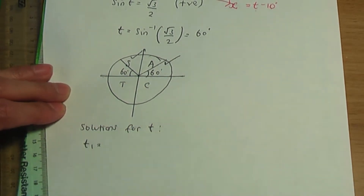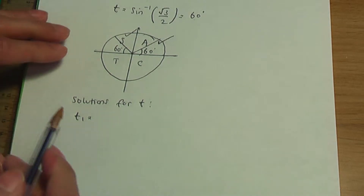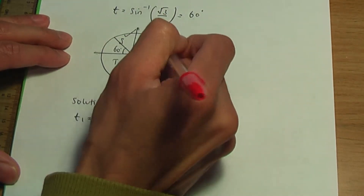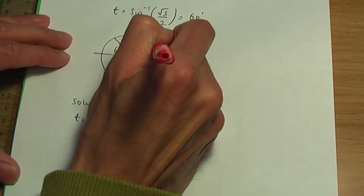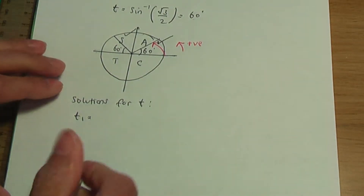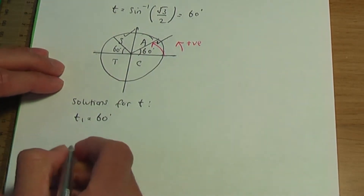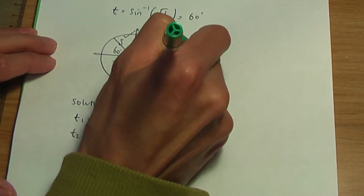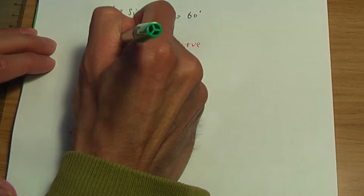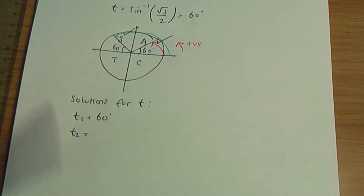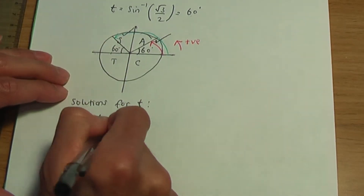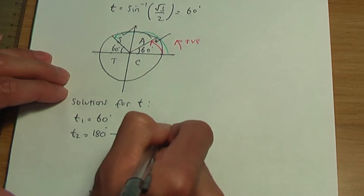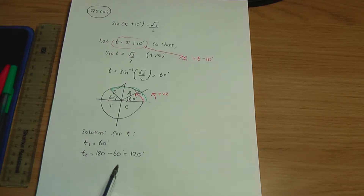The first solution, t1: positive angles are measured in the anticlockwise direction. From the zero-degree line, in the anticlockwise direction, until you strike that first line — that is 60°. For the second solution, t2: from the zero-degree line again in the anticlockwise direction until we hit that second line. The angle in a straight line is 180° minus this acute angle of 60°. So 180° − 60° = 120°. That is t2 = 120°.